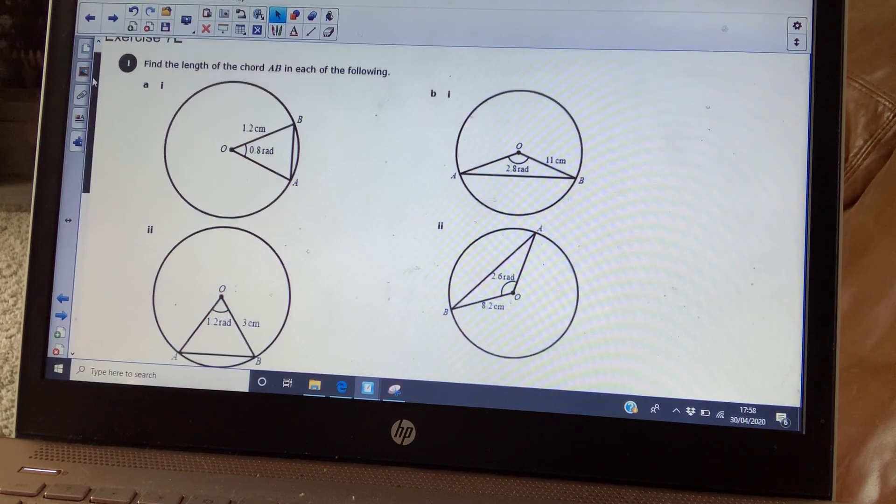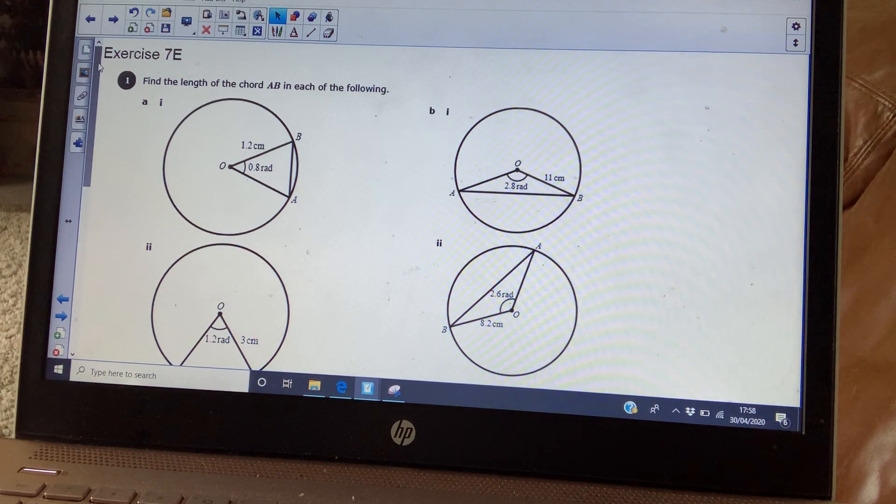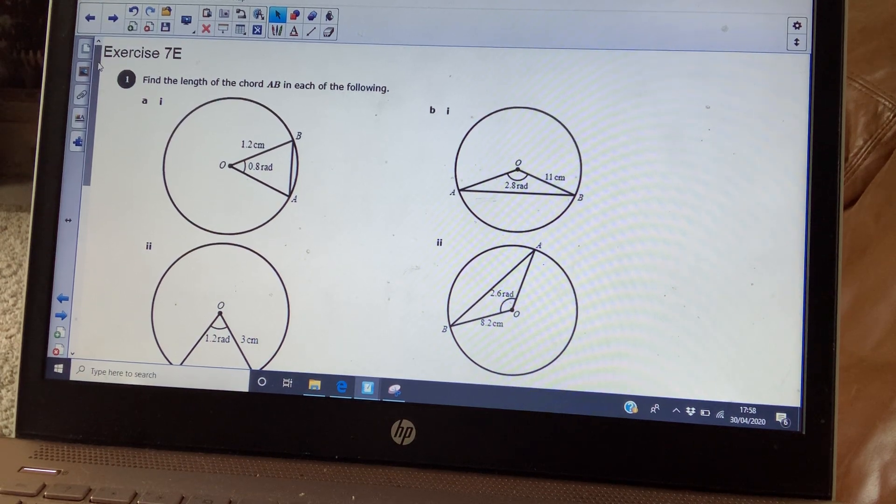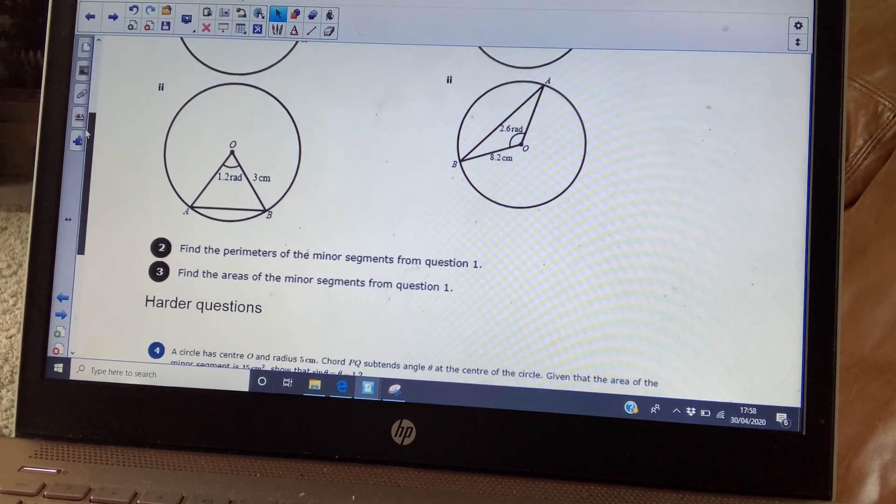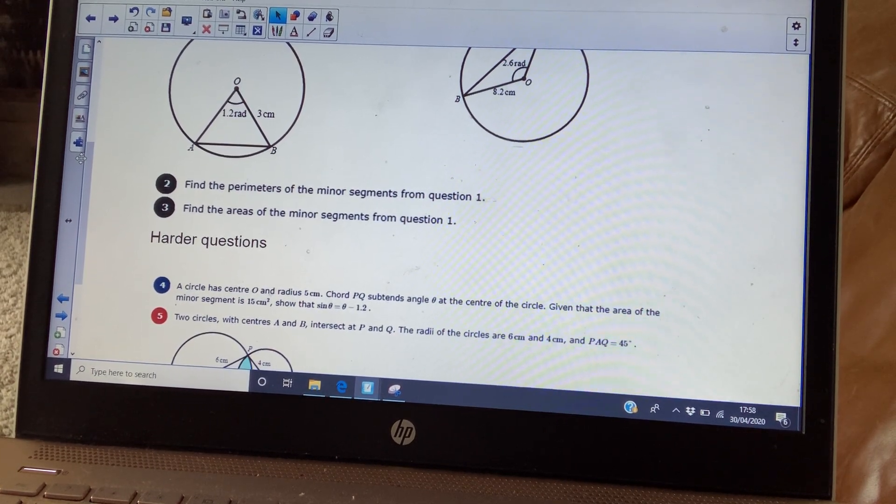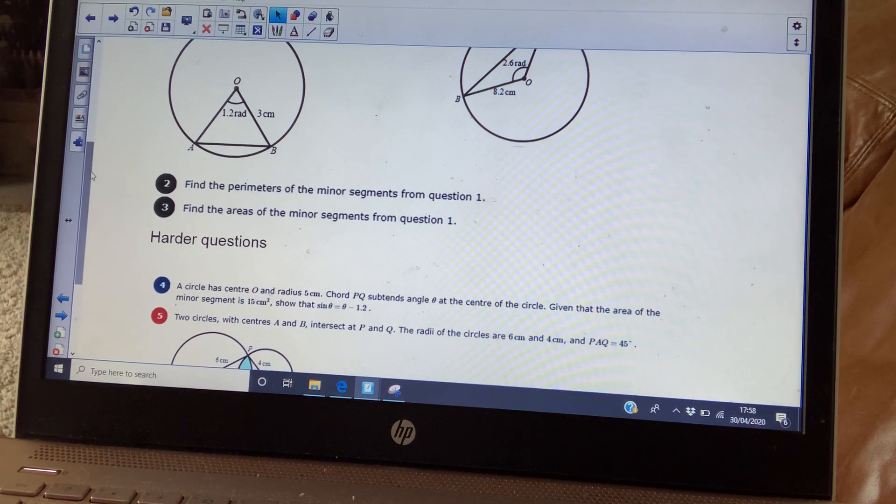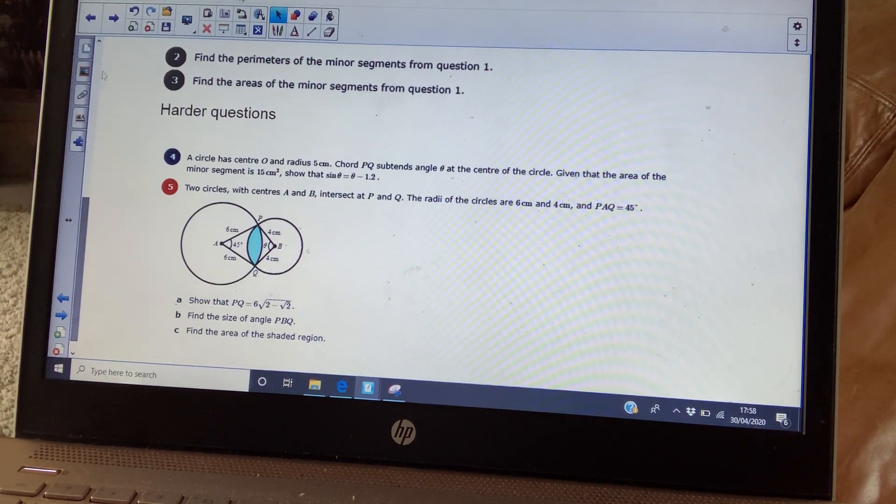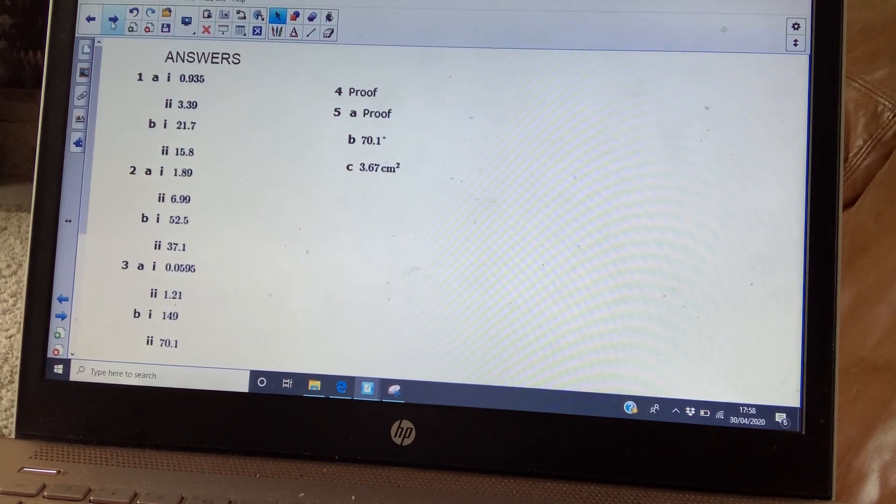Okay, homework. So these questions are taken from exercise 7E. So you've got question one, question two and question three. So this is what you need to do today. Question four and five are a bit harder. And then we've got the answers.